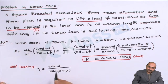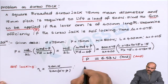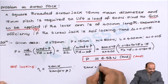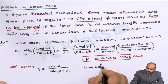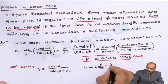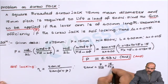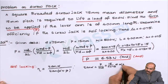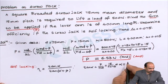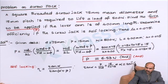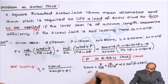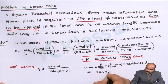To calculate efficiency, we first find alpha and phi. We know that tan(alpha) = p / (π·d) = 15 / (π × 75). From this we get tan(alpha) = 0.0637, so alpha = arctan(0.0637).